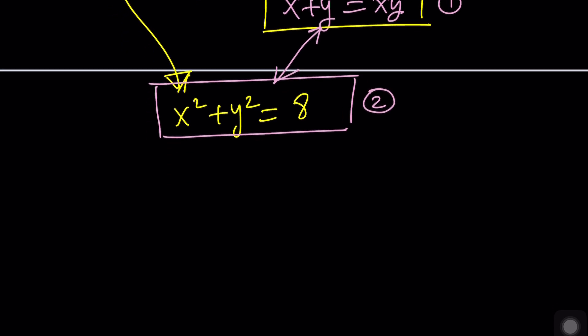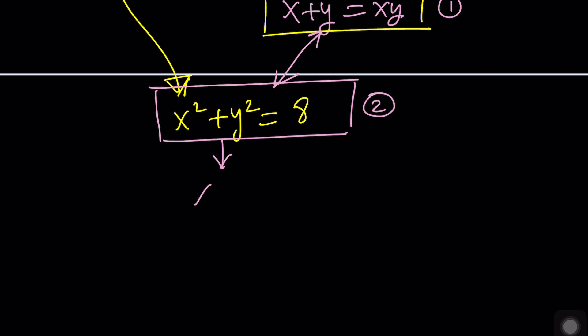Here's how it goes. X squared plus Y squared can be written as X plus Y squared minus 2XY. And that's equal to 8, as you know. Right? That follows from the second equation.